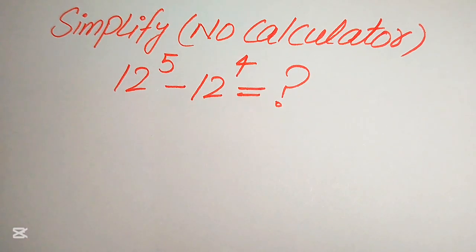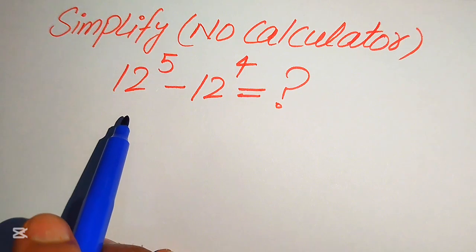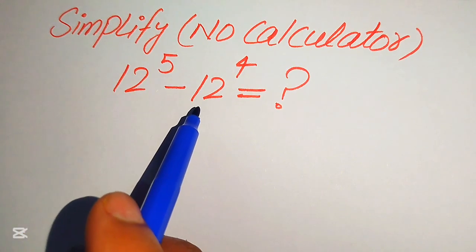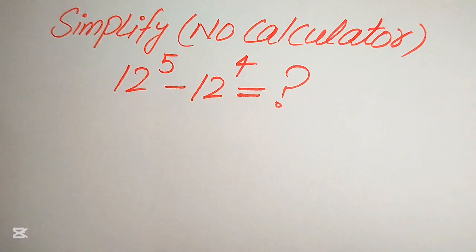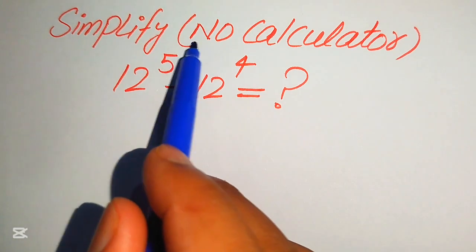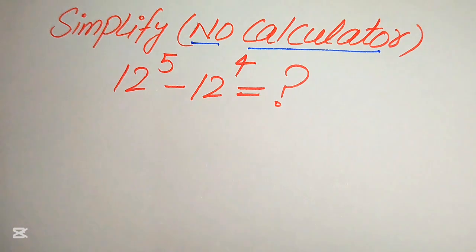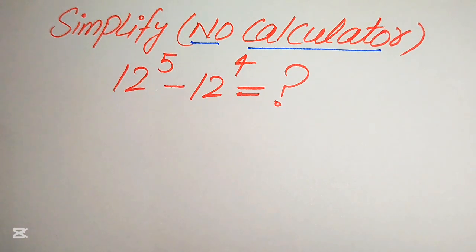Hello everyone. Today I want to show you how to simplify this nice algebraic expression without using the calculator, if we have 12 to the power of 5 minus 12 to the power of 4. We write this algebraic expression into simplified form, but remember one thing: a calculator is not allowed in this problem, so we need to show all of the working on paper.